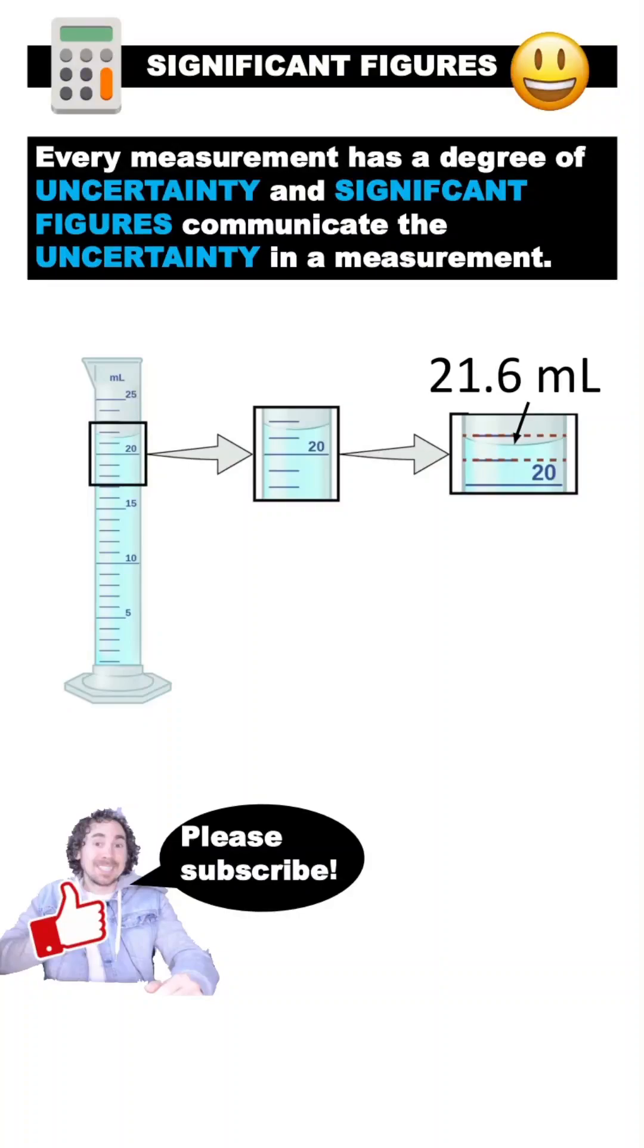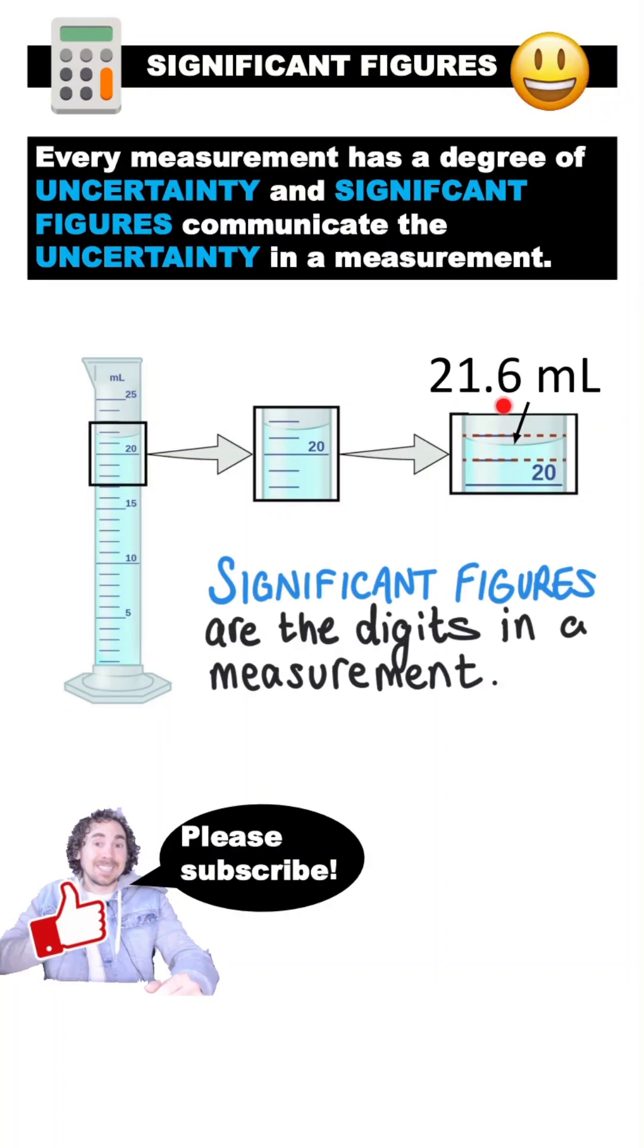Measurements are not exact. Every measurement has a degree of uncertainty. The digits in the number give value to the measurement, and they're called significant figures.